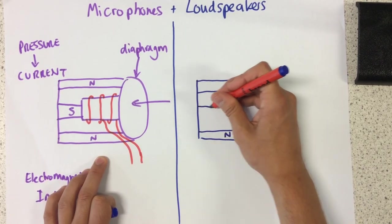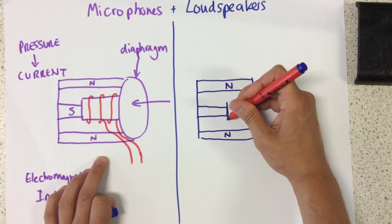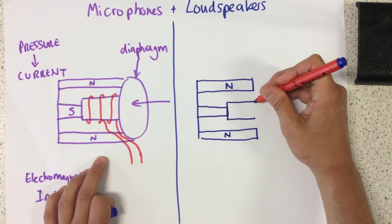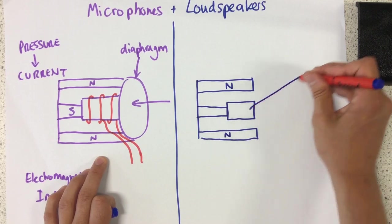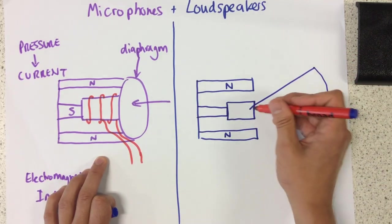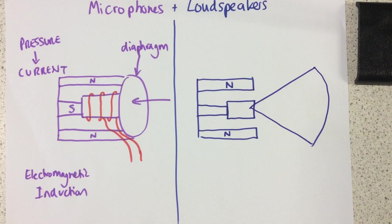Again, we have our magnets and again, we have a coil of wire. But this one is slightly different, like I'll show you in just a second.